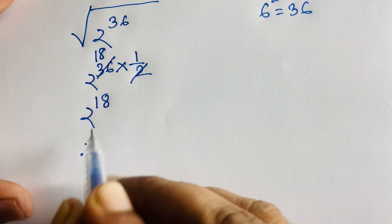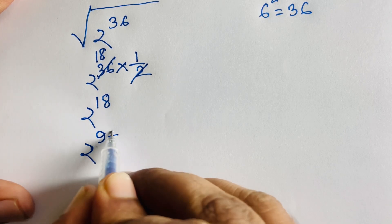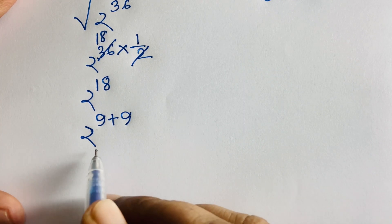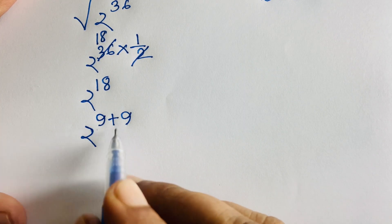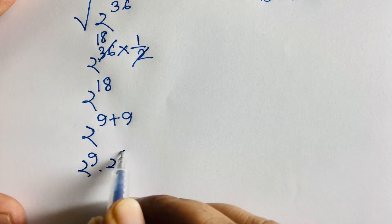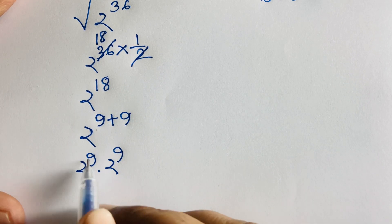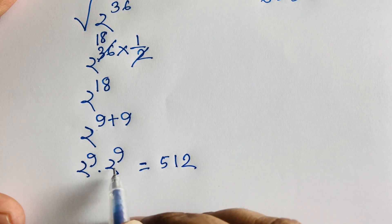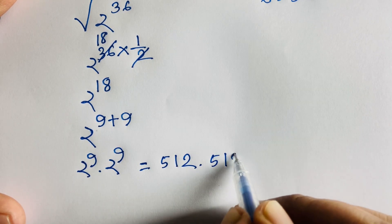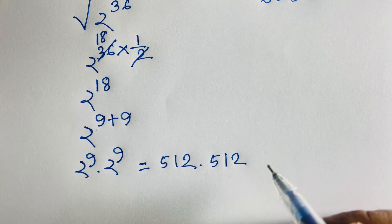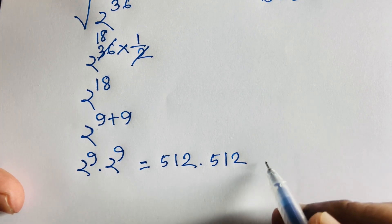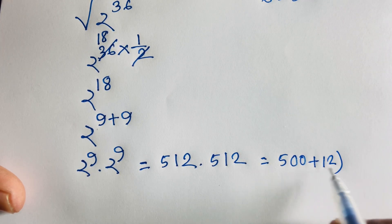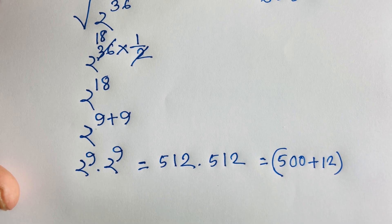We can write 2 to the power 18 as 2 to the power 9 plus 9. According to exponential rules, this equals 2 to the power 9 times 2 to the power 9. Since 2 to the power 9 equals 512, we now need to compute 512 times 512.